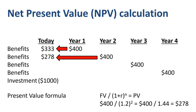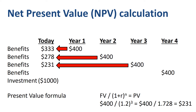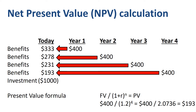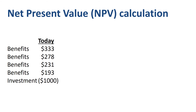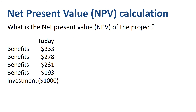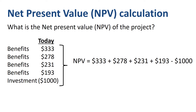Next, we calculate the present value of the $400 benefit expected three years from now, and the present value of the $400 benefit expected four years from now. We have now translated all cash flows into today's equivalent. To get to NPV, simply sum the amounts: $333 plus $278 plus $231 plus $193, minus the $1,000 investment today. The net present value is $35.